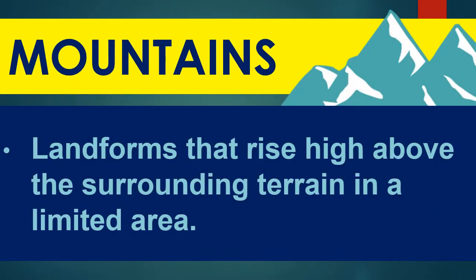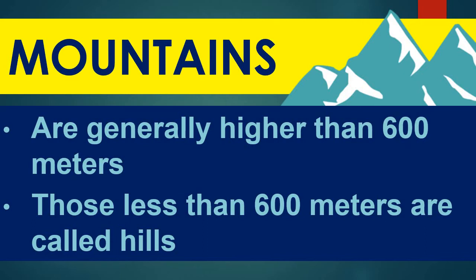We start with the definition of mountains. Mountains are landforms that rise high above the surrounding terrain in a limited area. These are generally higher than 600 meters, although some sources say 300 meters, and there is no universal definition for mountains. For our discussion today, we define mountains as highly elevated formations or land masses higher than 600 meters. Those less than 600 meters are classified as hills.